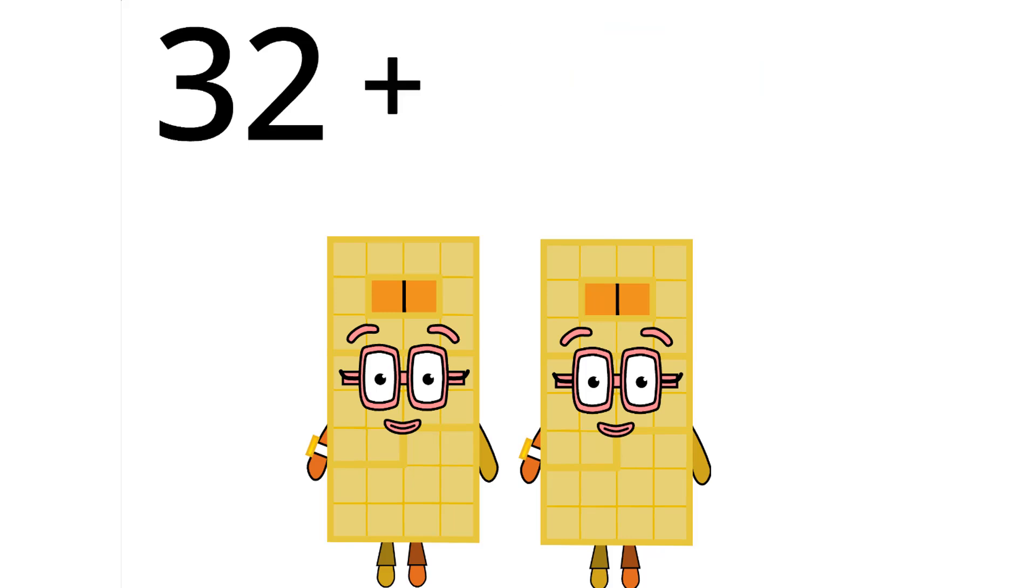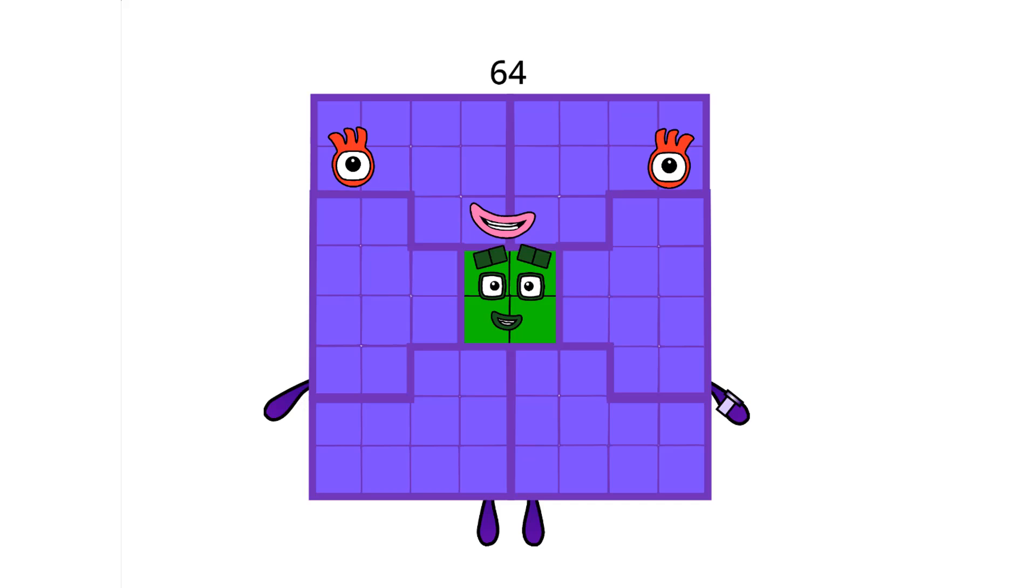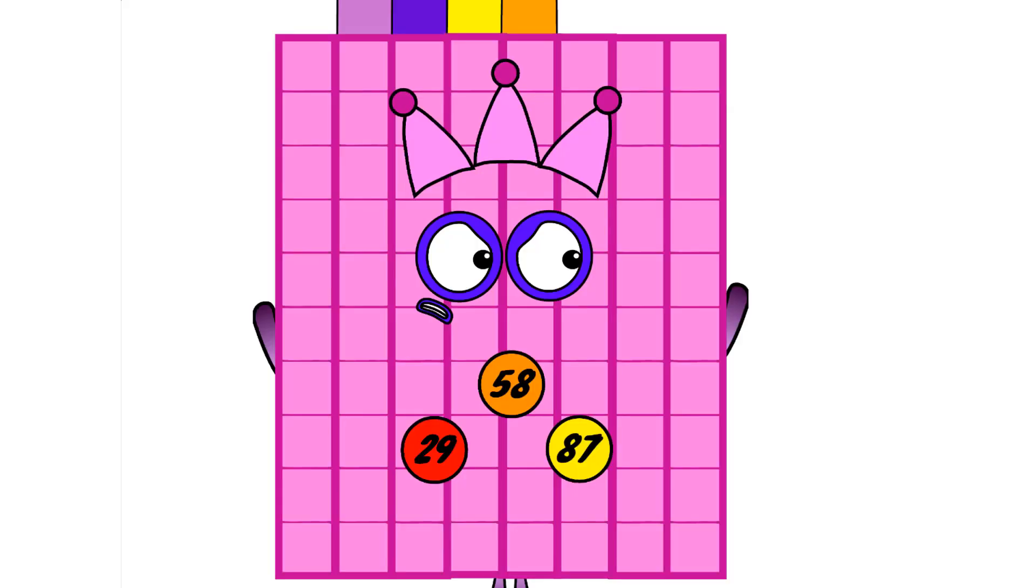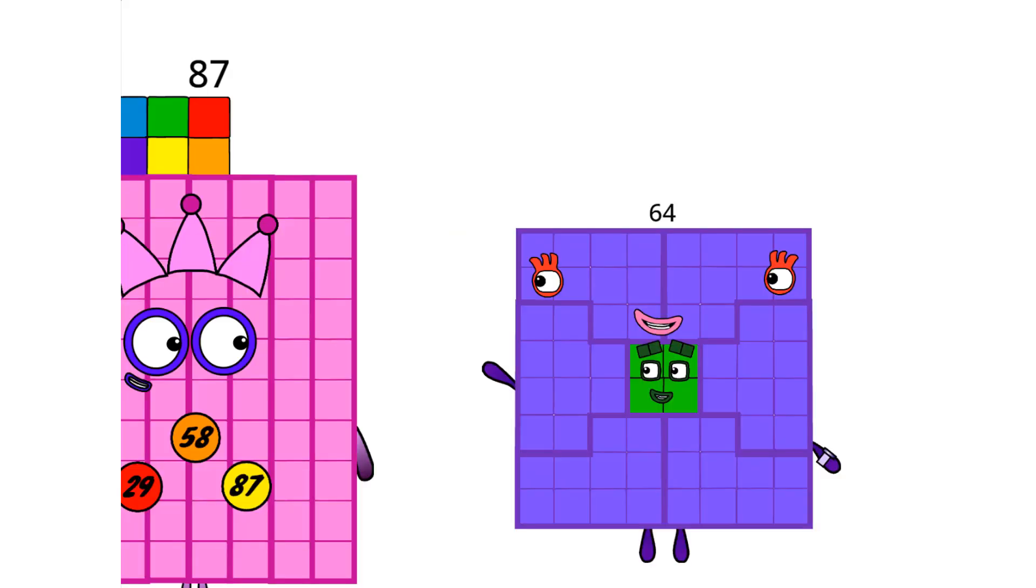32 plus 32 equals 64. 60 and 4. Compound numbers. Why did it have to be compound numbers? I don't want any number block to be any despicable compound. Not to worry, 87. 17 says it's easier to think of big numbers as painter's number together. Well, what else could I be?